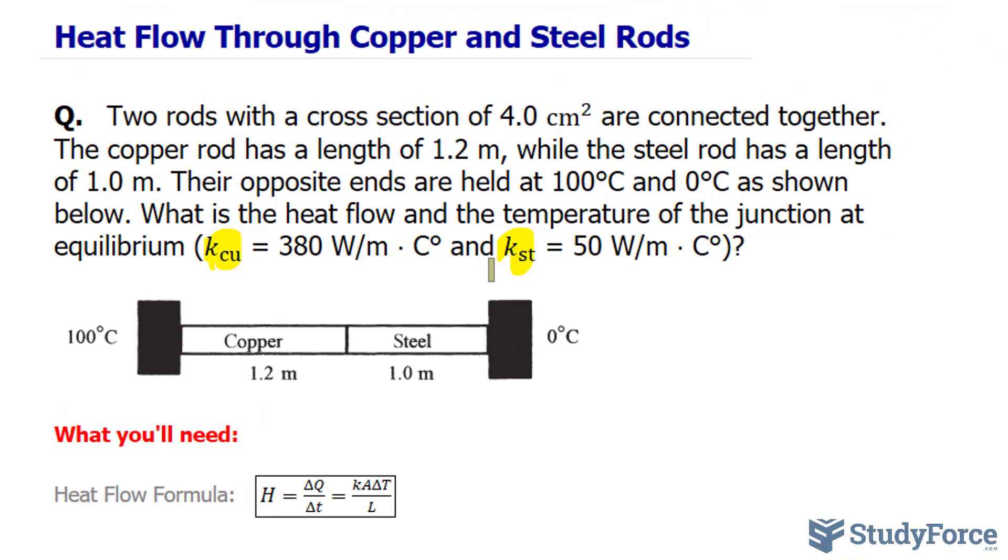What they're asking us to find is the heat flow along the two rods and the final temperature of the junction at equilibrium. Equilibrium is an important word here because it suggests that the heat flow will be the same throughout the entire length of the two rods combined, being 2.2 meters.